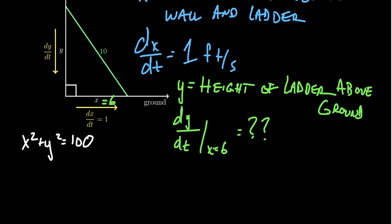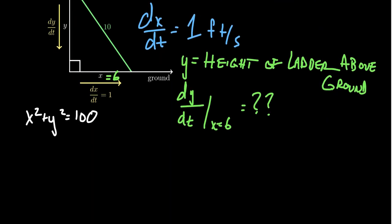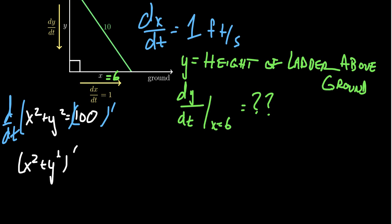We need an equation that relates the two variables together. Once we've done that, we take the derivative of both sides of the equation with respect to time. On the left-hand side, we get the derivative of X squared plus Y squared. On the right-hand side, the derivative of 100 — a constant — goes to zero. We can separate the sum: the derivative of X squared plus the derivative of Y squared equals zero.